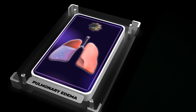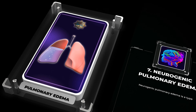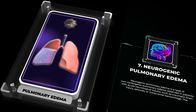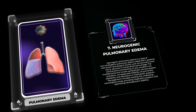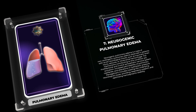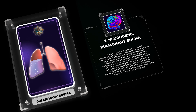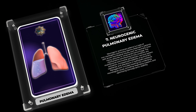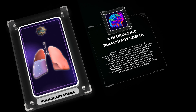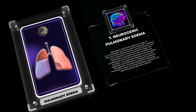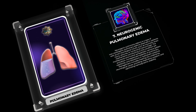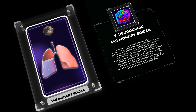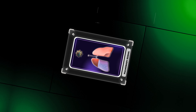Neurogenic pulmonary edema is a type of non-cardiogenic pulmonary edema observed in patients with acute neurological insults such as traumatic brain injury, seizures, or intracranial hemorrhage. The contributing mechanisms are multifactorial and involve sympathetic nervous system activation, increased permeability of pulmonary capillaries, and alterations in hydrostatic pressure. Management includes treating the underlying neurological cause, providing respiratory support, and optimizing hemodynamic stability.